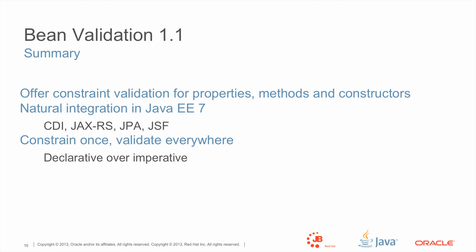If I had to use a catchphrase: Bean Validation is about 'constrain once and validate everywhere.' You define the constraints on the domain model, and then all other frameworks — JSF, JPA, and others — validate the logic at the right lifecycle. You can call Bean Validation imperatively to validate a given object graph, but the key to success is for you not to have to do that. Just declare the constraints, and the Java EE 7 ecosystem will declaratively validate everything for you.